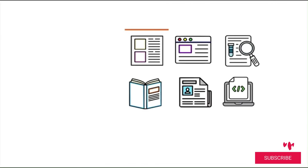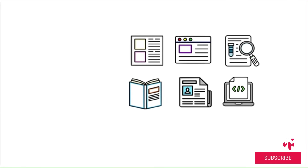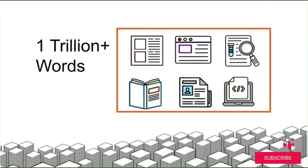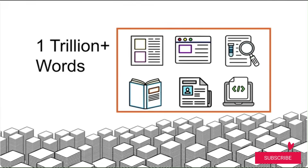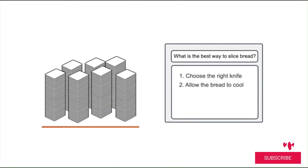Imagine the task of scanning every word on the internet — every blog, website, research paper, book, newspaper, computer program and more. That's the goal of massive computers that power tools like ChatGPT: to capture everything it can on the web. This snapshot of over a trillion words creates the foundation for large language models. By analyzing the words in the model, ChatGPT can answer our questions and requests with human-like quality.